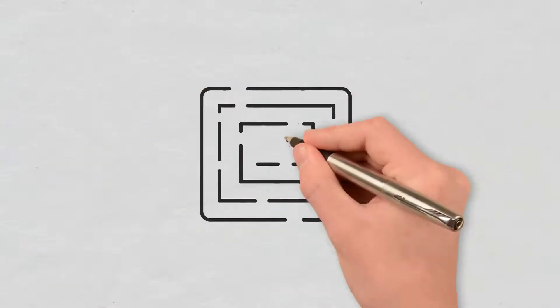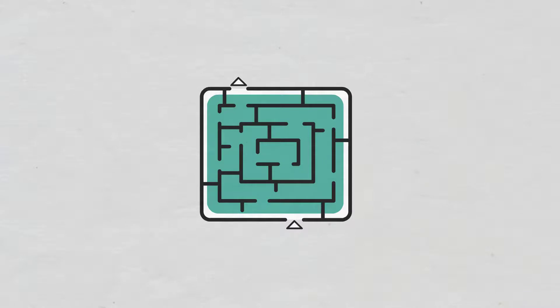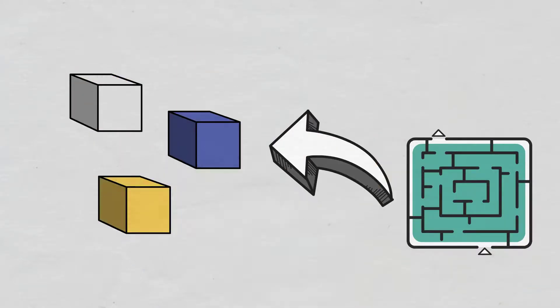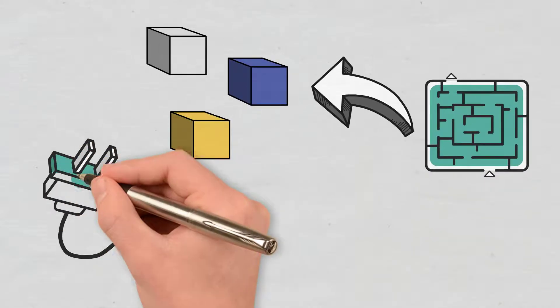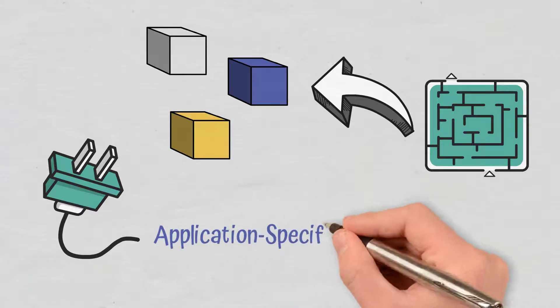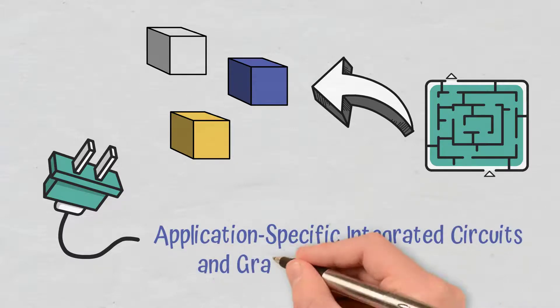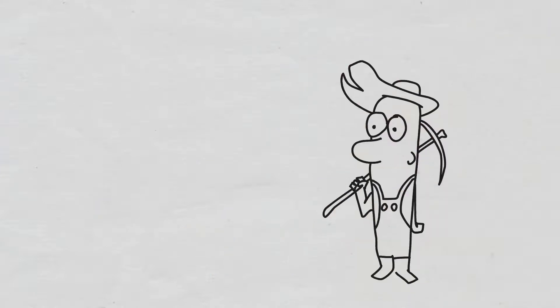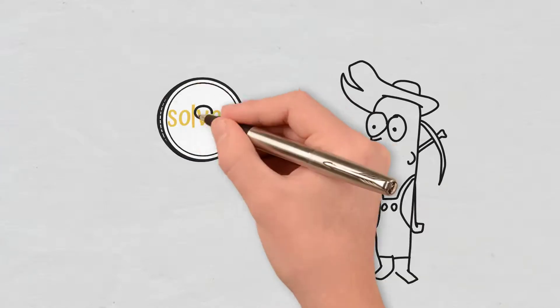This involves solving cryptographic puzzles in order to create new blocks on the blockchain. The process requires a considerable amount of energy because it uses hardware like application-specific integrated circuits and graphics processing units. It is also known as mining, and as soon as the puzzle is solved, a crypto reward is received.